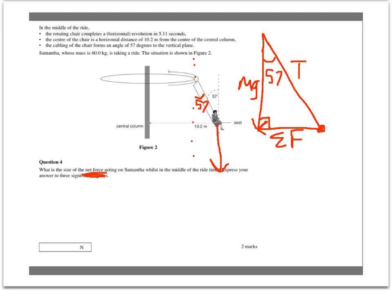Looking at our triangle, we see we have the opposite and the adjacent side, that is the one that we know about. Using our knowledge of trigonometry, we can say that tan of 57 equals the opposite, the net force, over the adjacent, the weight force, mg.